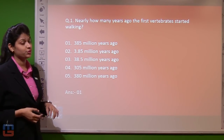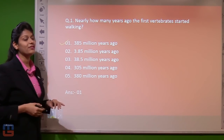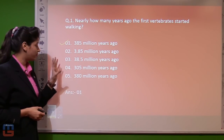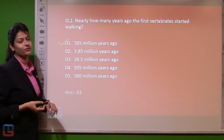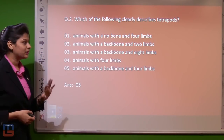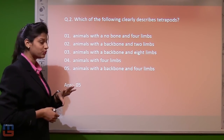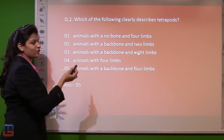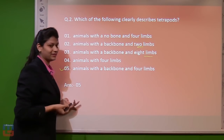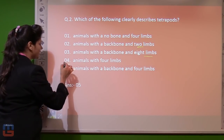Question one: nearly how many years ago did the first vertebrates start walking? The answer is option 1 — 385 million years ago. The other options — 3.85, 38.5, 305, or 380 million years ago — are out of frame. Question two: which of the following clearly describes tetrapods? From the passage, tetrapods are animals with a backbone and four limbs. The correct answer is option 5 — animals with a backbone and four limbs. Options describing animals with no backbone, two limbs, or eight limbs are not applicable.